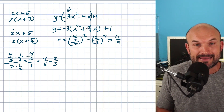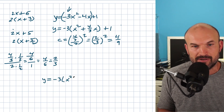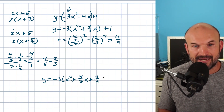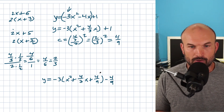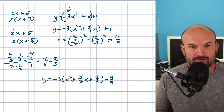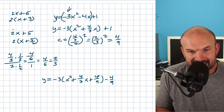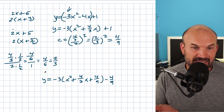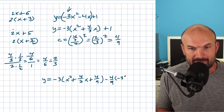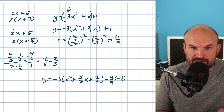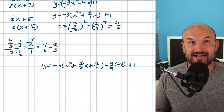So now I have y equals negative three times the quantity x squared plus four thirds x plus four over nine. I added four over nine, so I need to subtract four over nine outside. But here's something really important: that four over nine is inside parentheses being multiplied by negative three. By distributive property, everything inside those parentheses is being multiplied by negative three — so when I subtract the four over nine outside, I also need to multiply it by negative three. And don't forget that constant one is still there.